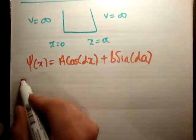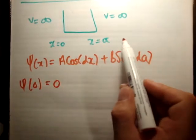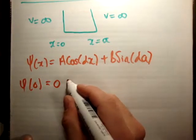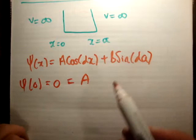So the next thing I'm going to do is apply my boundary conditions. ψ(0) is equal to 0 because of course we cannot have the particle existing outside the well, and as a result of that, A is equal to 0. Because the cosine of 0 is 1, the sine of 0 is 0.